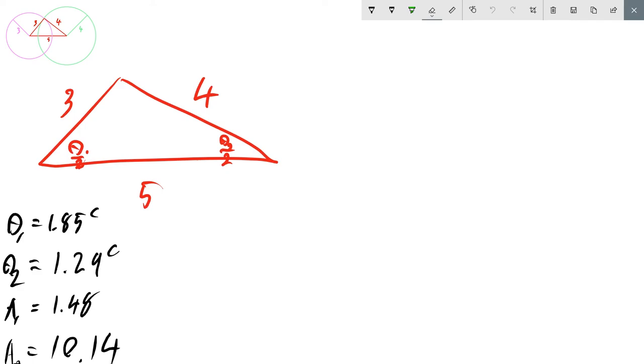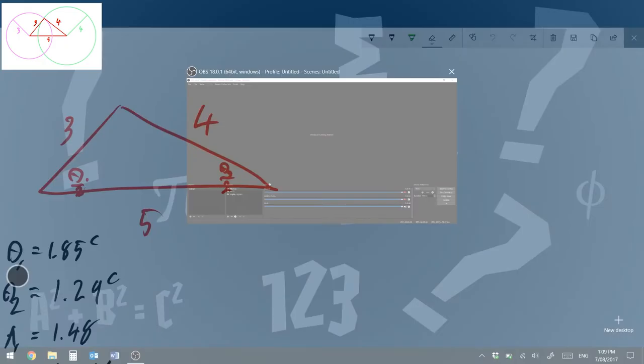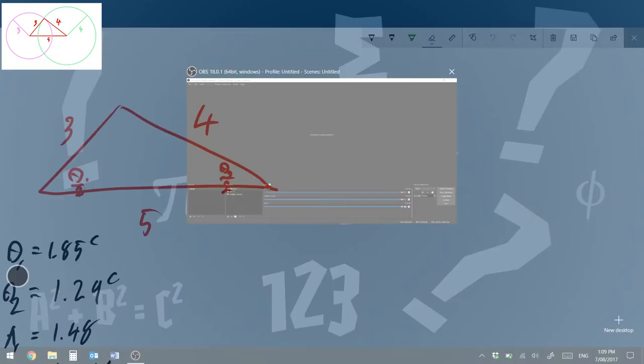So off screen I have calculated the second area using the exact same method but using θ₂ this time, and I got area two is equal to 10.14. So now I can add area one to area two to get the actual area of the intersection, and that equals 11.62. And depending on what units we have, centimeters, millimeters, kilometers, inches, whatever, that would be squared because we're dealing with area.